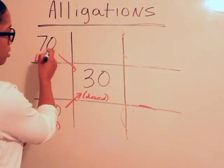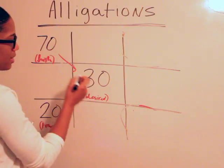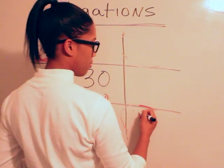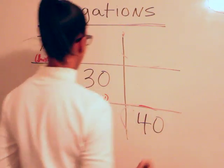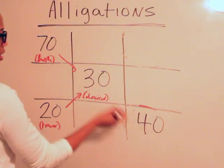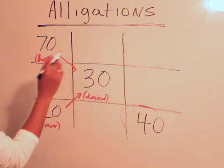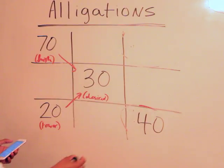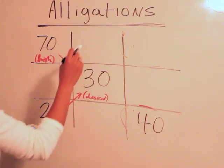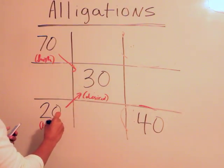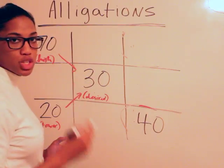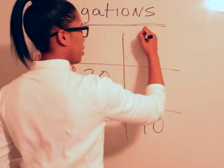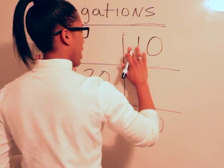We also know that here we go down and we subtract here. So it's going to be 70 minus 30, which will give us 40, because it's higher minus the desired. But in this case here we're going to go desired minus lower, which will give us 30 minus 20, which is 10. So we have 10 right there.